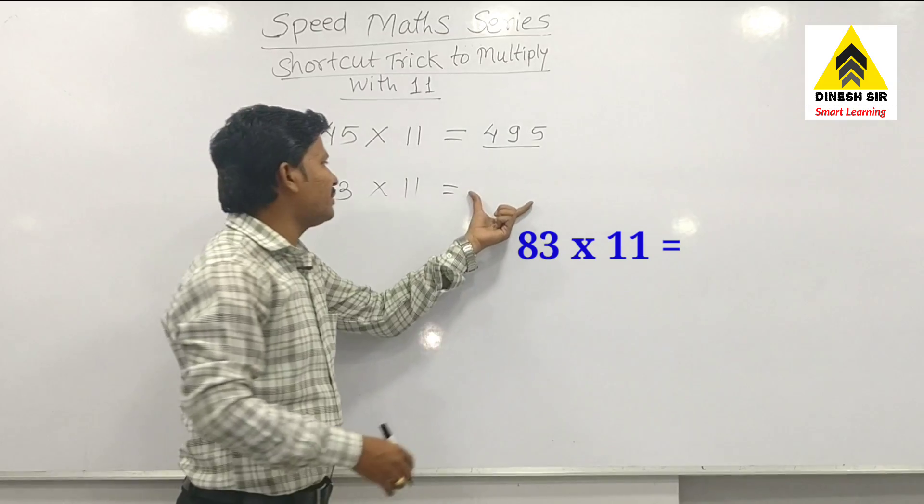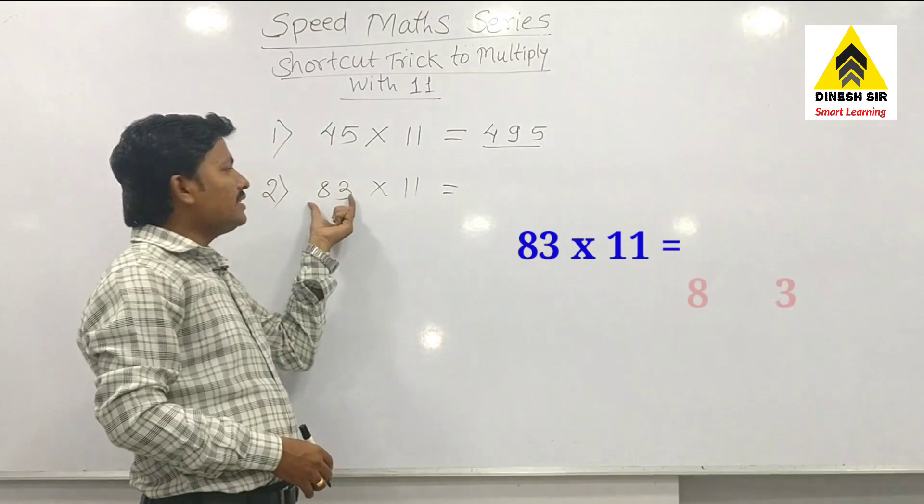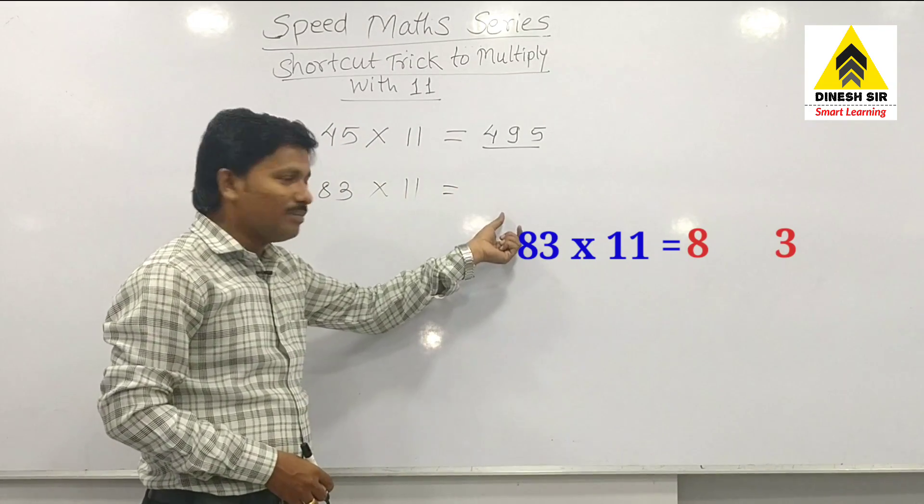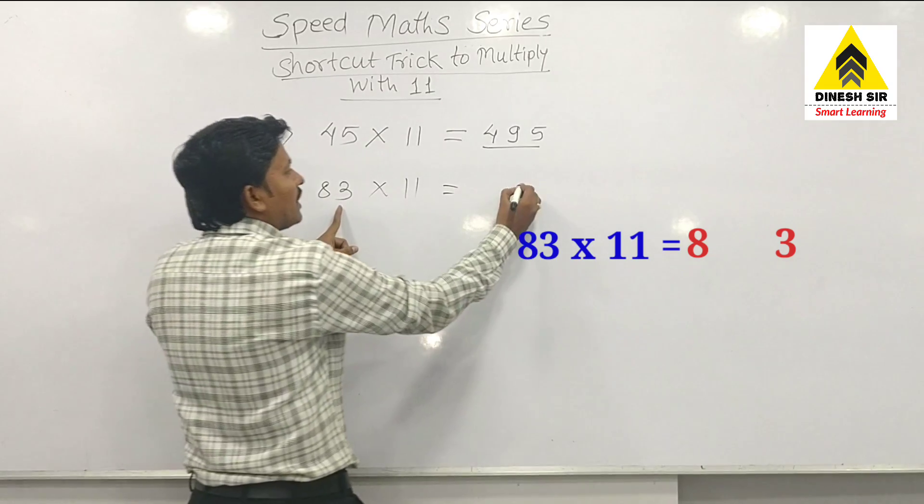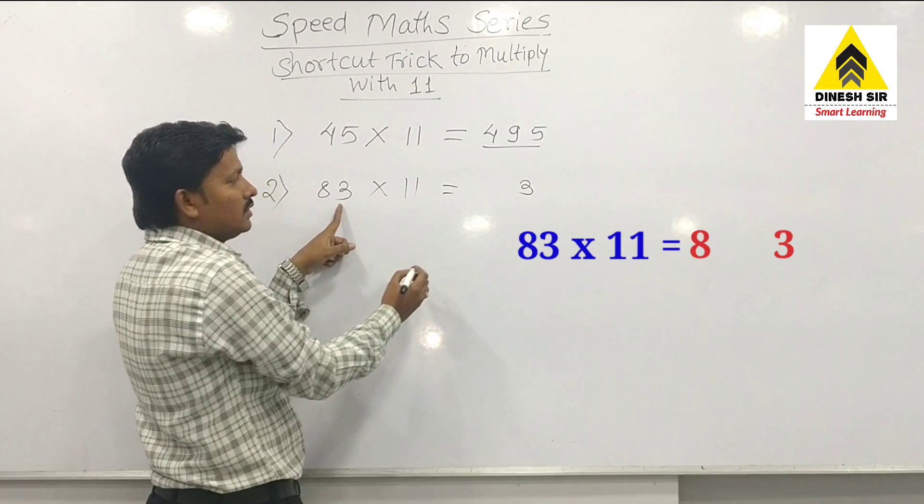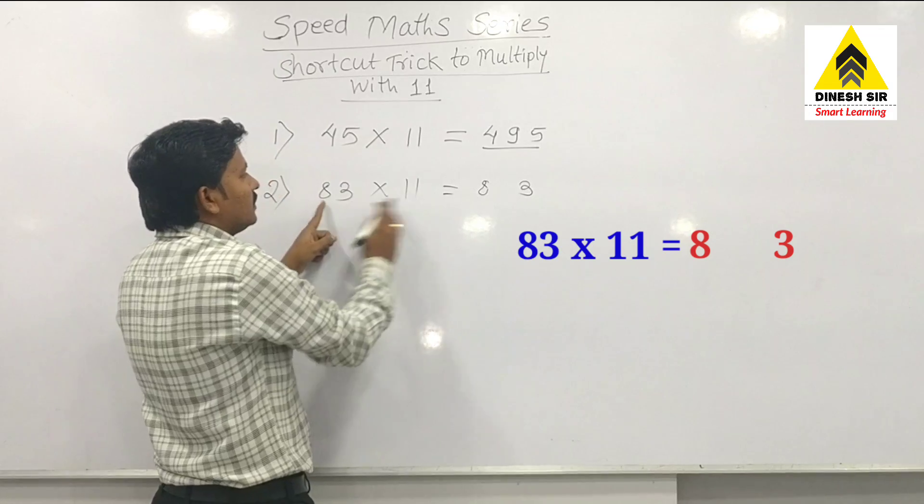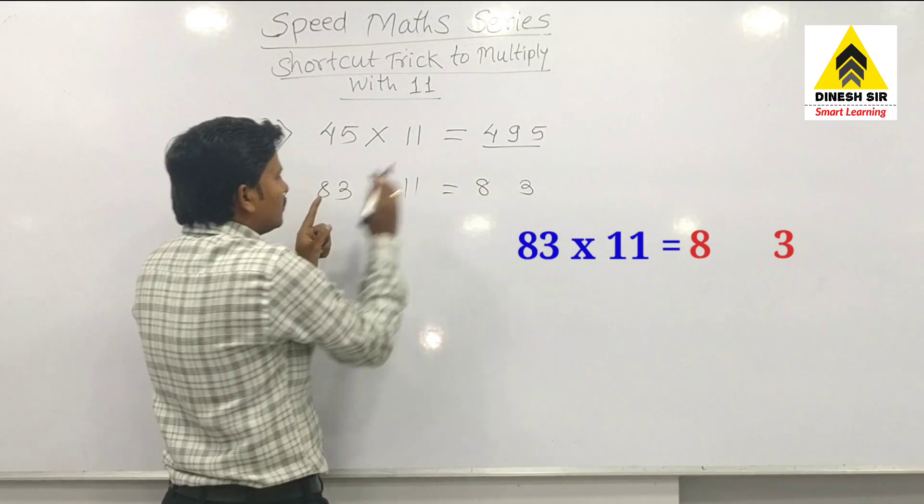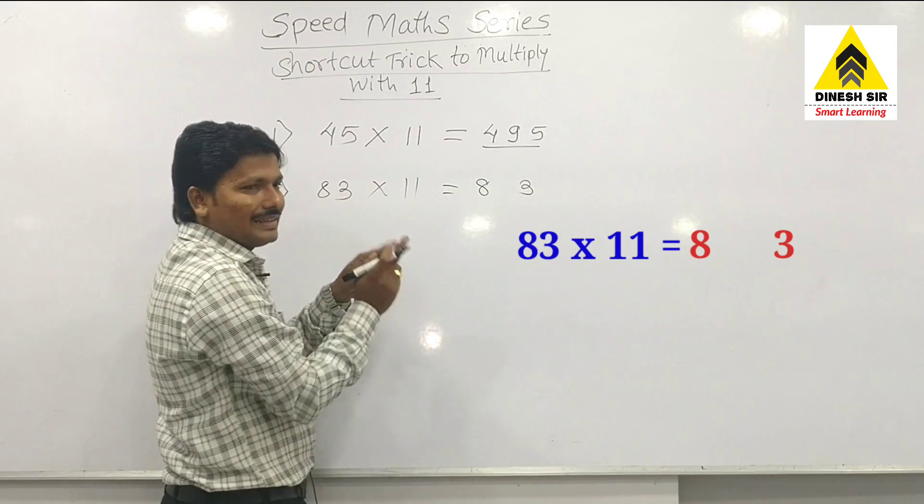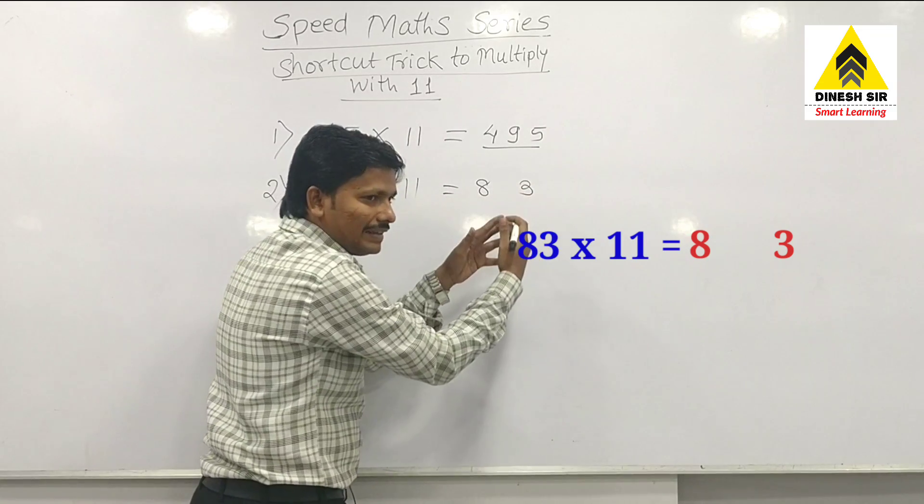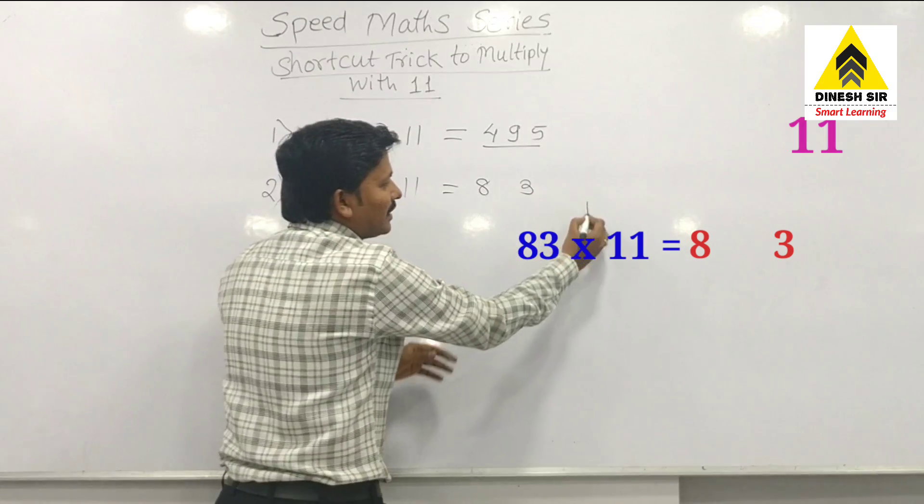Add these two numbers, right in that middle. Suppose I am writing 3 over here and I should write 8 over here. Now 8 and 3, adding 8 and 3 becomes 11, but 11 is a two-digit answer.